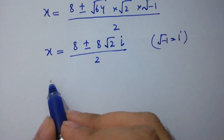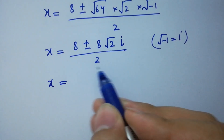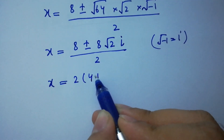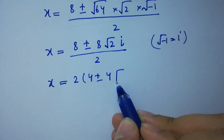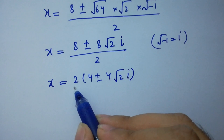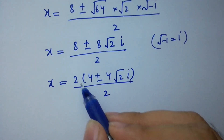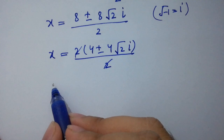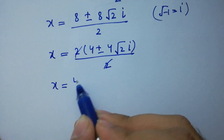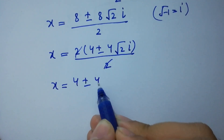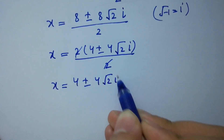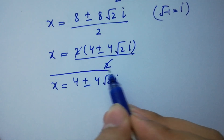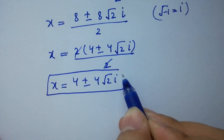Simplifying: we can factor 2 from the numerator to get 2 times (4 plus or minus 4 square root of 2 i), over 2. The 2's cancel, giving x equal to 4 plus or minus 4 square root of 2 i, which are the values of x.